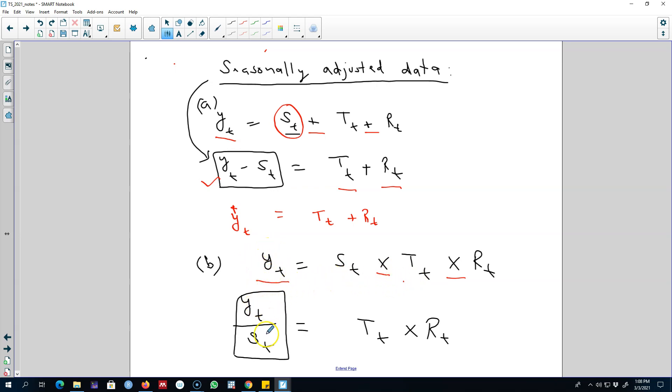In this case, we will divide our time series by the seasonal component to get a new seasonally adjusted series. We can call it Y star, and now this series will contain only two components: the trend component and the remainder component.